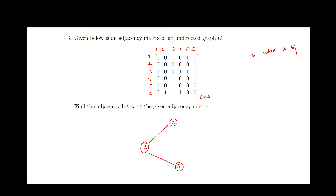In the second row, vertex 2 is adjacent to only vertex 6. So this is vertex 2 and it is only adjacent to vertex 6. In the third row, vertex 3 is adjacent to vertex 1, vertex 4, vertex 5, and vertex 6. We have already drawn an edge between 1 and 3, so 3 is also adjacent to 5, 6, and 4.